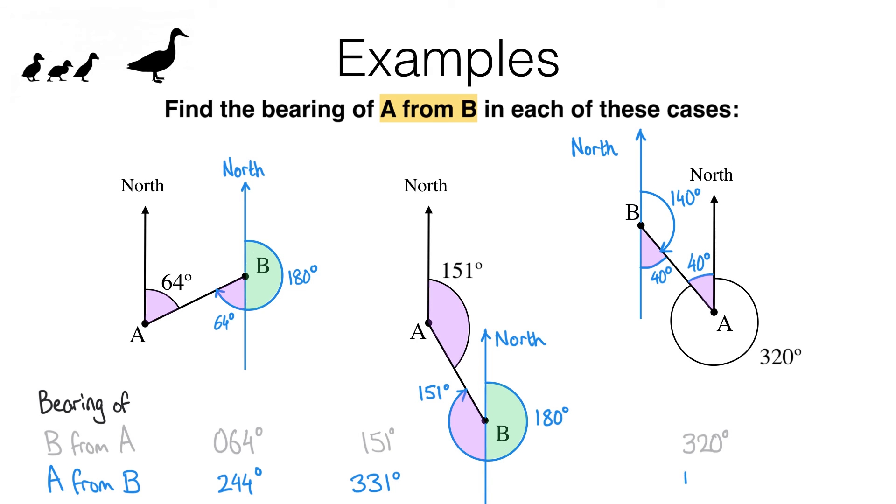So that gives us the bearing we are looking for, 140 degrees. So here we have the answers we were looking for. It's worth noticing something here. We've just written the bearing of A from B in each case. And if you compare those to the bearings of B from A, you will notice that the difference between the bearings is 180 degrees. And this will always be the case.